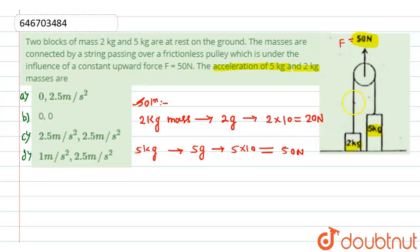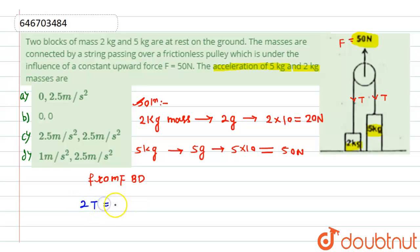From the free body diagram, the tension acts in the downward direction as T. We can see that 2T equals the applied force of 50 newton, which gives us T equals 25 newton.